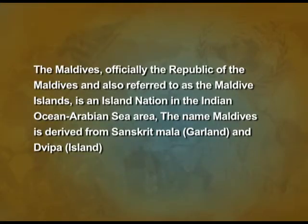Let us start with the Maldives. The Maldives, officially the Republic of the Maldives, is also referred to as the Maldive Islands. It is an island nation in the Indian Ocean and Arabian Sea area. The name Maldives is derived from the Sanskrit word having two parts: 'Mala,' which means garland, and 'Dweep,' which means island. Together, Mala and Dweep — garland and island — make it the Maldives. As you can see in the picture, the island looks like a garland.